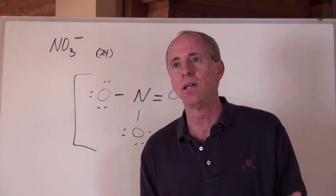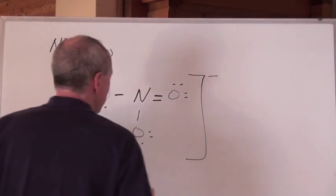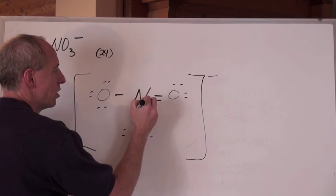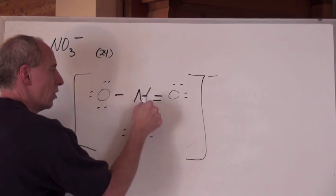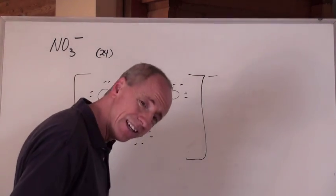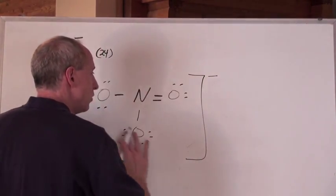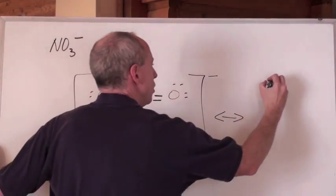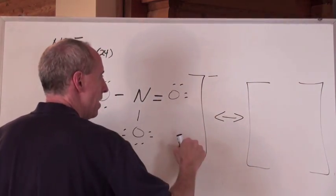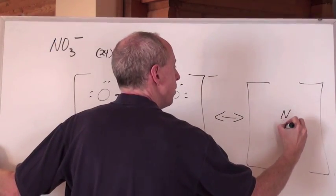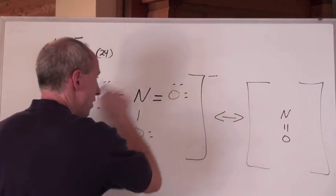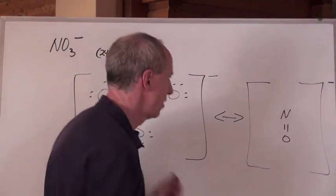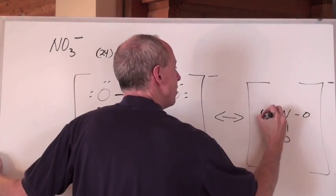You know, at any one time, this oxygen could have donated its lone pair to complete nitrogen's octet, but this one could have, or this one could have. And so, really, what it is, is that you could have drawn the Lewis diagram this way, or you just do this whole thing again, and you put the double bond down here. So, you draw this whole thing again, put the double bond down there. And that is called a resonance structure.